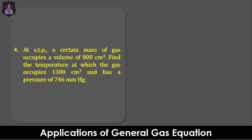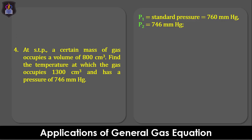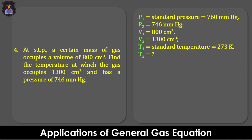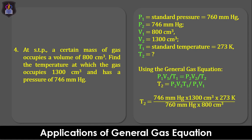Question 4: At STP, a certain mass of gas occupies a volume of 800 cm³. Find the temperature at which the gas occupies 1300 cm³ and has a pressure of 746 millimeters of mercury. Here, the initial pressure P1 is the standard pressure 760 millimeters of mercury and the final pressure P2 is 746 millimeters of mercury. The initial and final volumes V1 and V2 are 800 cm³ and 1300 cm³ respectively. The initial temperature T1 is the standard temperature 273 Kelvin and we have to find the final temperature T2. Given a PVT relationship, we'll make use of the general gas equation P1V1 over T1 equals P2V2 over T2, and make T2 the subject of the formula.